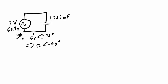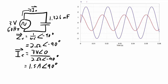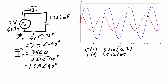Knowing the impedance of that capacitor, we can figure out how much current is in this circuit. That will be the voltage divided by the impedance, and that works out to 1.5 amps with a phase angle of 90 degrees. Here's a nice graph that shows the voltage and the current as they're changing over time. The voltage as a function of time is 3 sine omega t. The current has a 1.5 amp peak, so it's 1.5 sine omega t. However, the current is phase shifted from the voltage — it's a cosine wave since it's at its peak at time 0. The current is leading the voltage by pi over 2 radians, which is also 90 degrees.